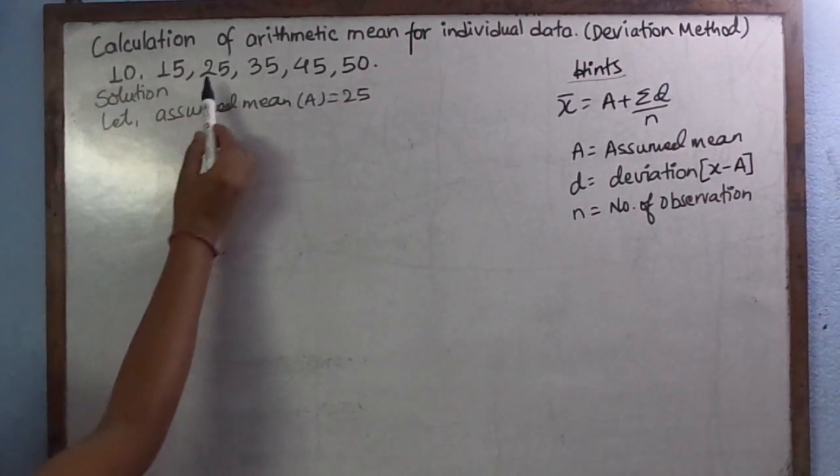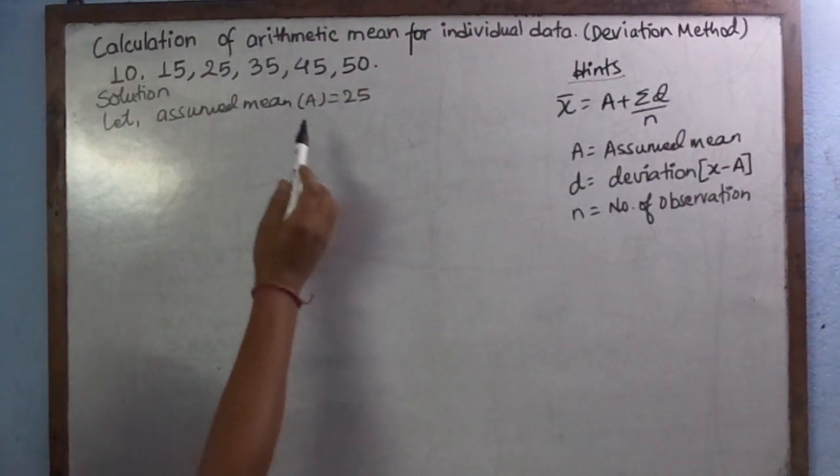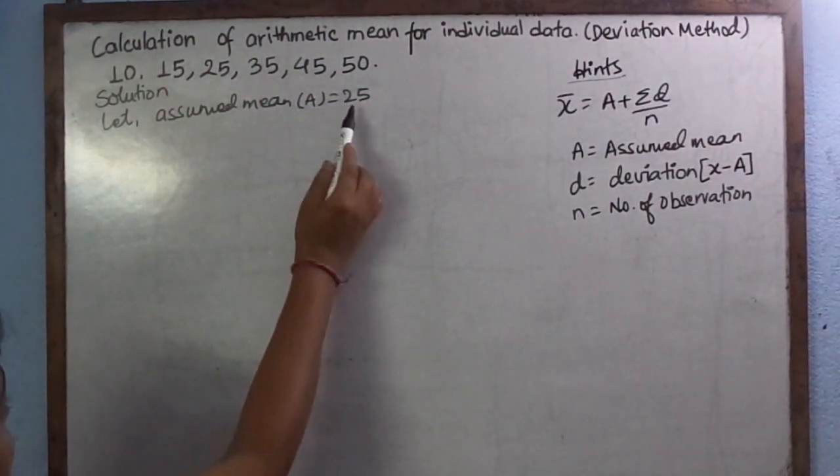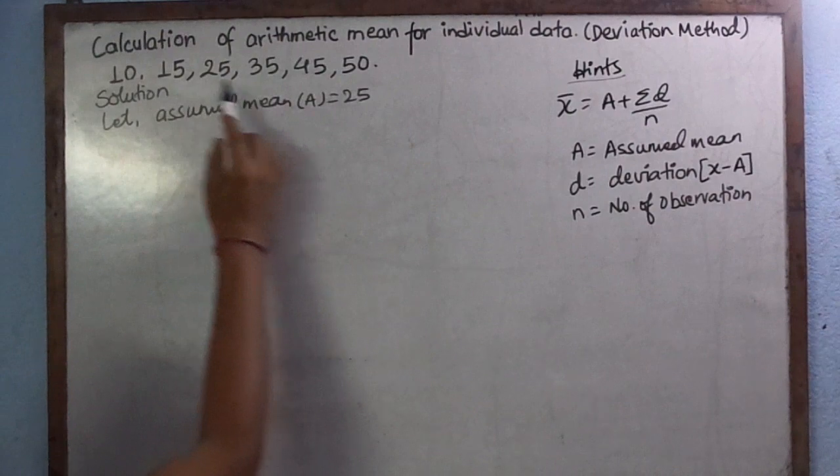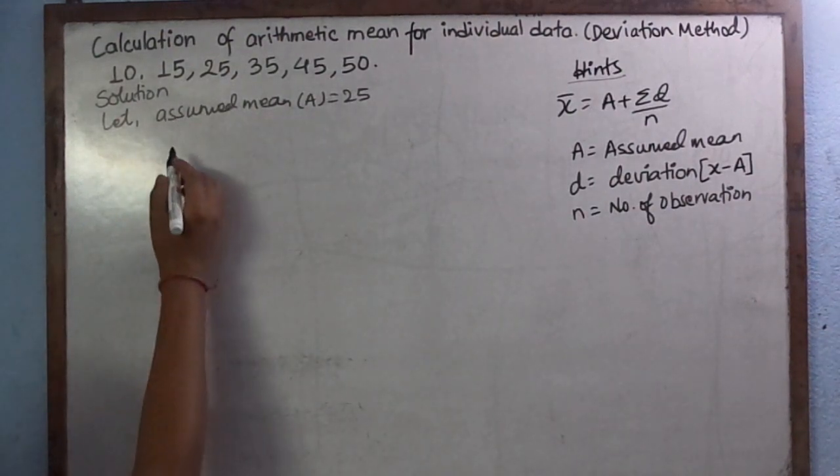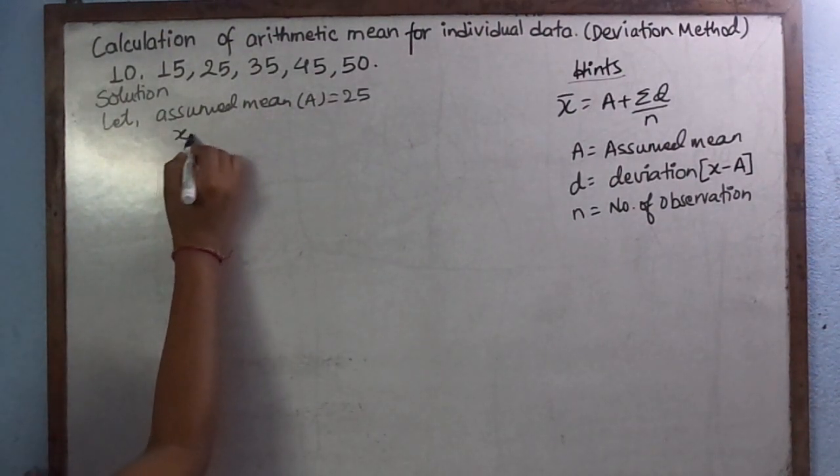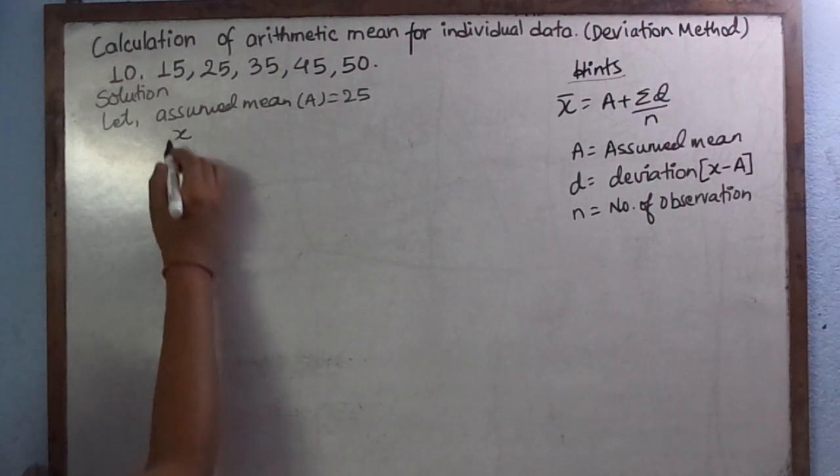You can choose any one number from the given data. It is not necessary that you have to choose 25, you can choose 50, 10, what you want. Now we need to construct the table. Let this individual data be denoted by X.